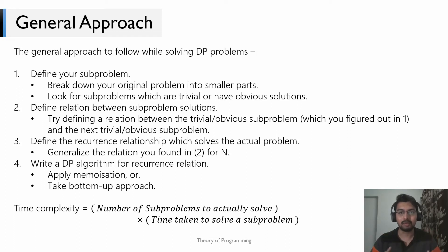Here is your guiding light to solving DP problems — four steps. First, define your sub-problem. Hints: break down the original problem into smaller parts and think about what a smaller version looks like. Also look at trivial or obvious cases — in Fibonacci, F(1) and F(2) signal that a smaller Fibonacci number is your sub-problem.